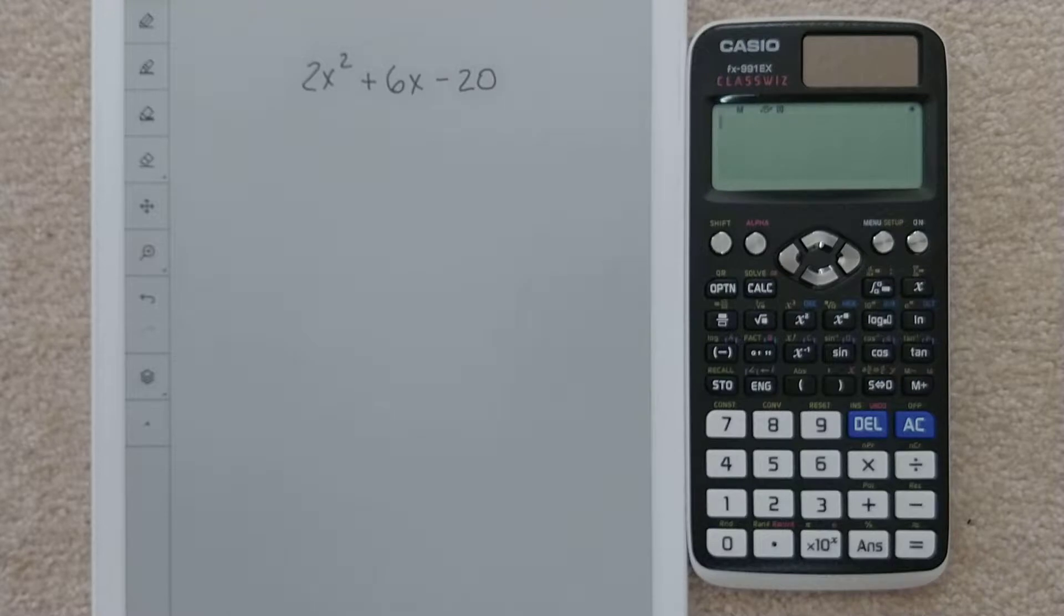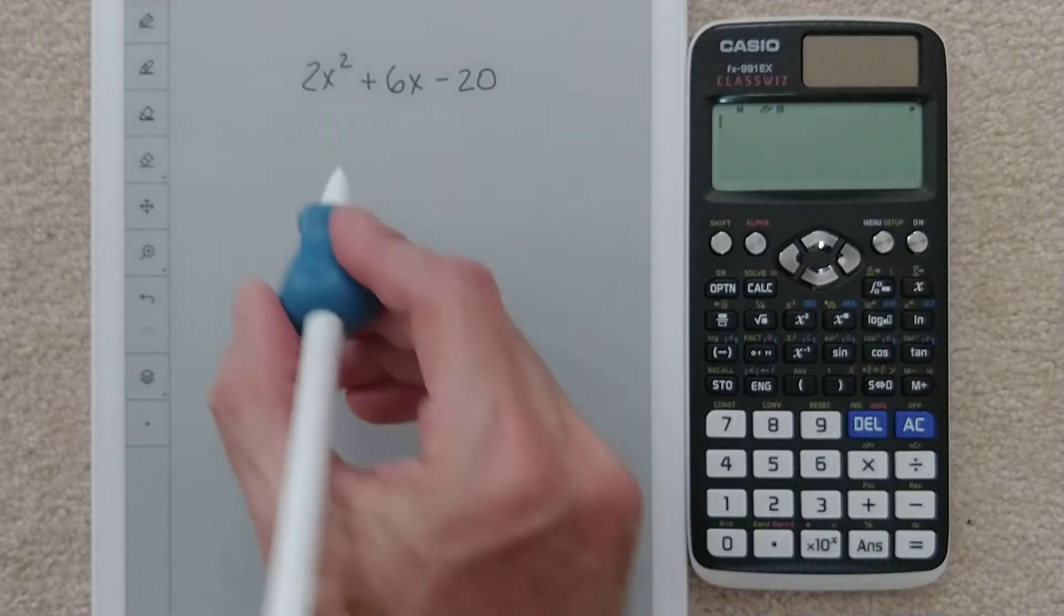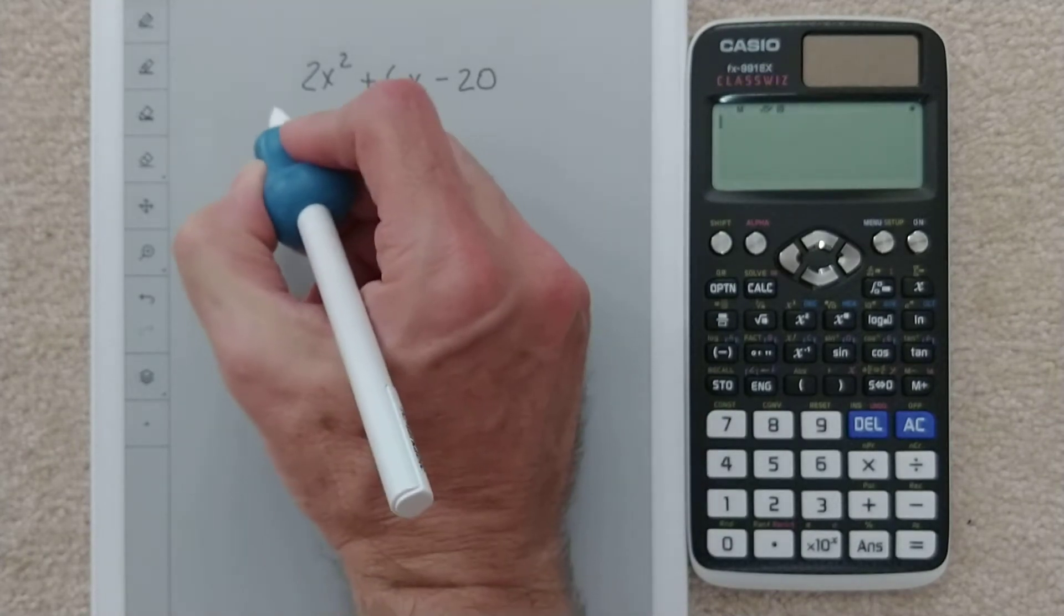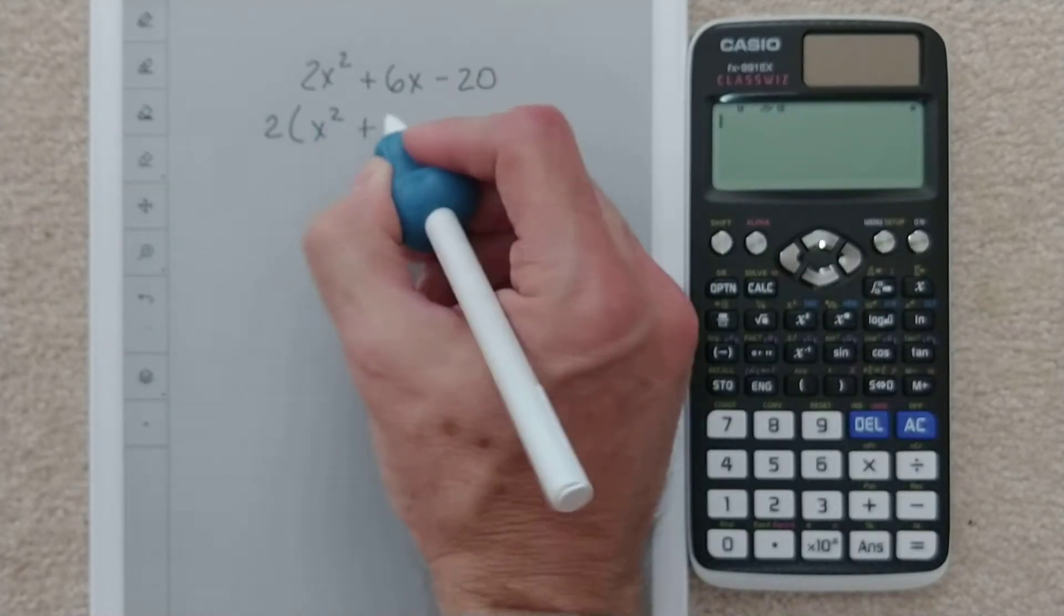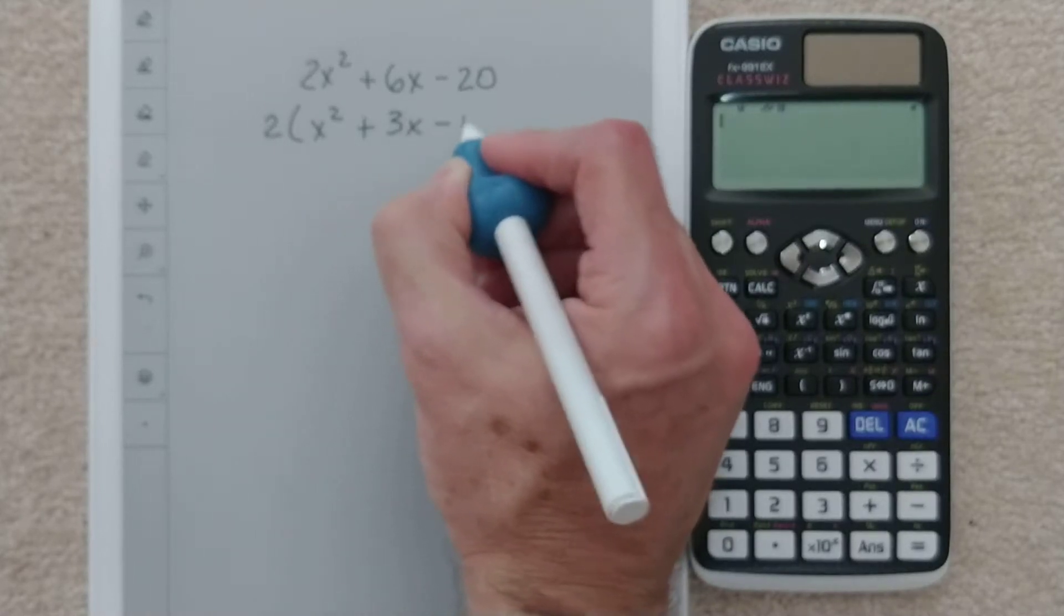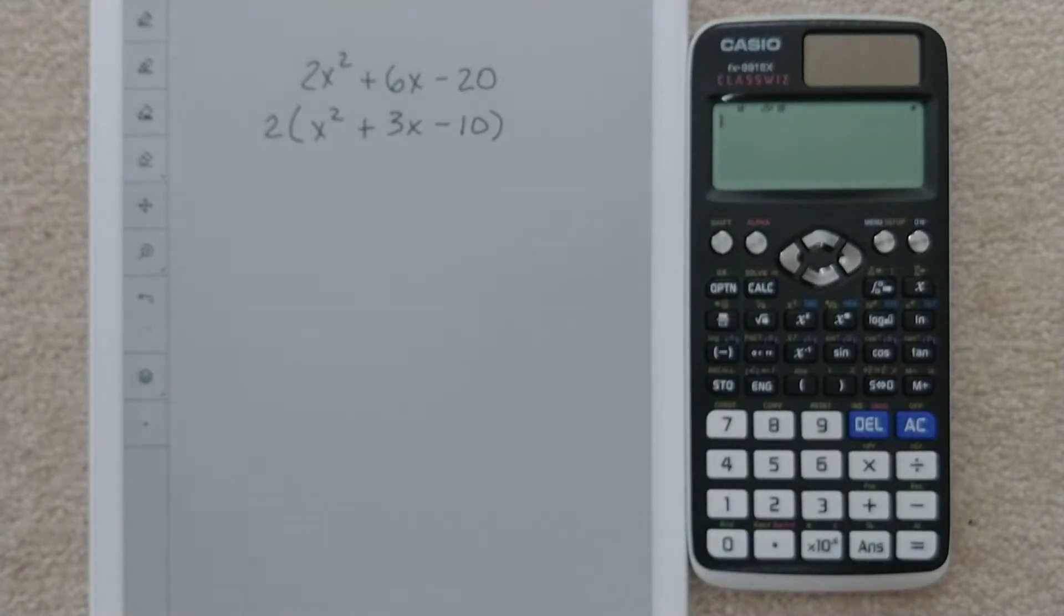The very first step, though, is I always want to factor these coefficients and the constant. And since they're all even numbers, I can take a 2 out. You can, too. So this would be 3x, and this would be negative 10. Basically, each number is getting cut in half.